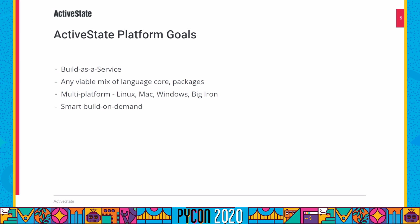I'm going to give you a brief outline of the ActiveState platform so you can see some of the challenges we face. It has a number of fundamental goals it needs to meet in order to provide developers and end users with something truly useful, and to provide it in a cost-effective way. It's a build-as-a-service offering which goes beyond what traditional continuous integration systems can provide. It will allow you to build projects with any viable mix of open source language cores and packages from their ecosystems, and create download-and-go runtime distributions for Linux, Mac, Windows, and a range of Big Iron platforms. It will leverage prior builds to provide a fast, repeatable, smart build-on-demand service.